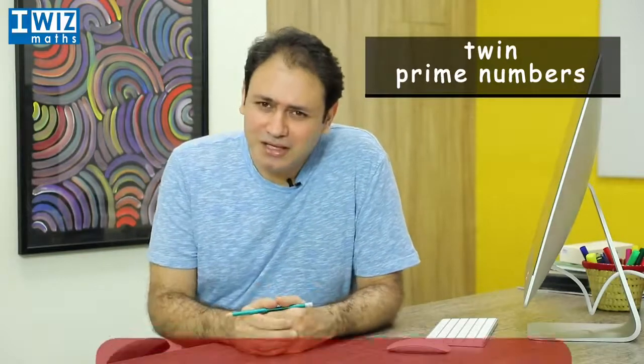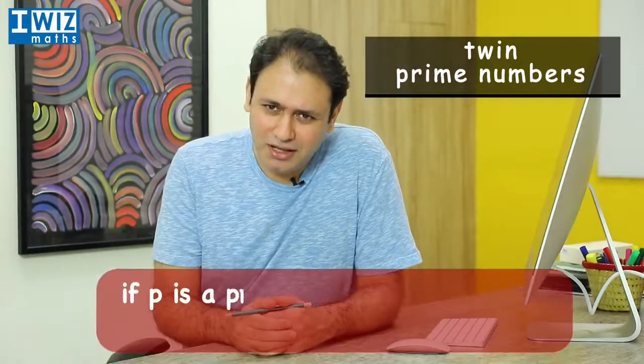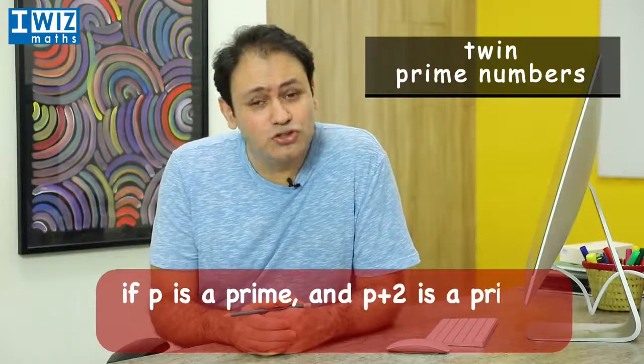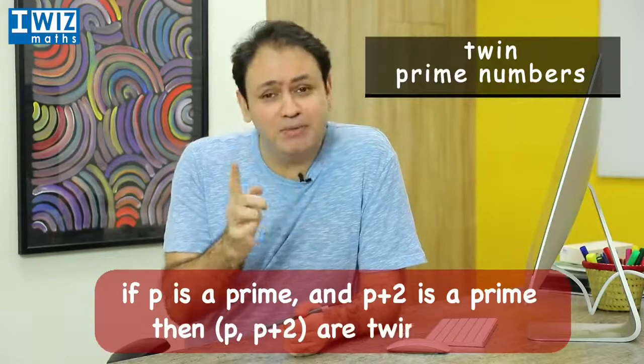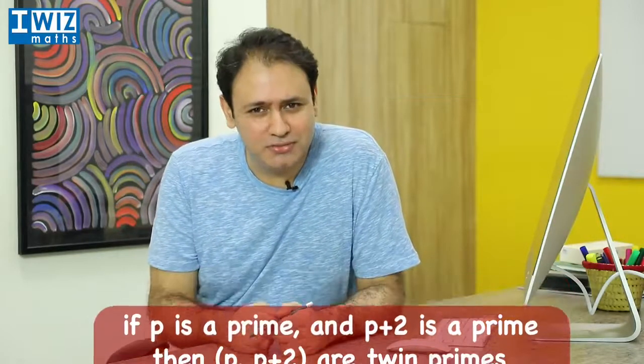Now, the definition of twin primes is as follows. If p is a prime number and p plus 2 is also a prime number, then the pair p and p plus 2 are known as twin primes.